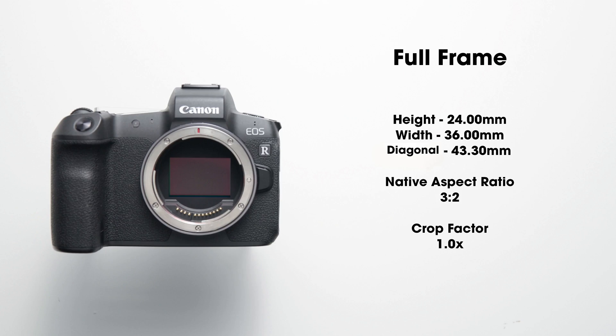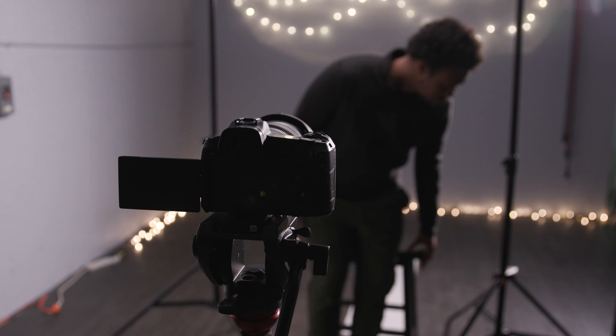First, we'll start with full-frame sensors and why it's considered the standard measurement when determining crop factor. The term full-frame is in reference to one slot of 35mm film. The full-frame image sensor and a traditional slot of 35mm film share the same area and size. This was the most common format among professionals for many years, making it the default size in determining crop factors.